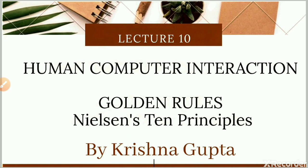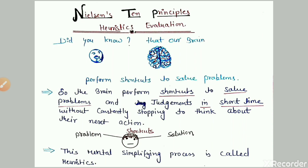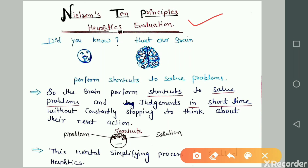Nielsen's ten principles: we know that our brain performs shortcuts to solve problems and this process is called heuristics evaluation. This is simple thinking where the brain performs shortcuts to solve problems and judgments in short time without constantly stopping to think about the next action.